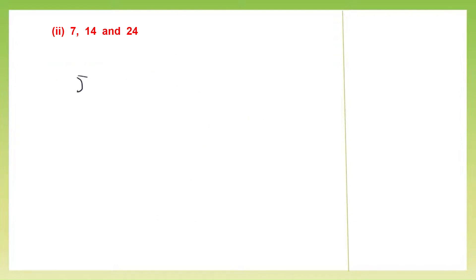So here we have 3 numbers. What we can do is take the first 2 numbers first. So here we are going to take the bigger number, put it in and divide it by the smaller number. 7 twos are 14, so minus 0. So here we have got 7 as our HCF of 7 and 14 only. Now we have a third number, 24.